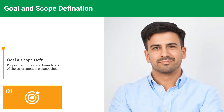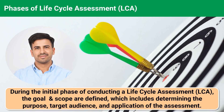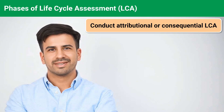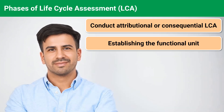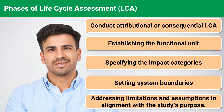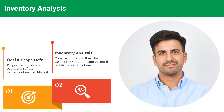In the Goal and Scope Definition phase, the purpose, audience, and boundaries of the assessment are established. During this initial phase, the Goal and Scope are defined, which includes determining the purpose, target audience, and application of the assessment. This involves deciding whether to conduct an attributional or consequential LCA, establishing the functional unit, specifying impact categories, setting system boundaries, and addressing limitations and assumptions in alignment with the study's purpose.